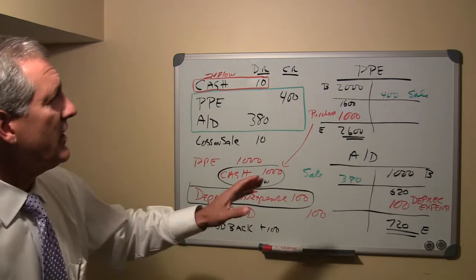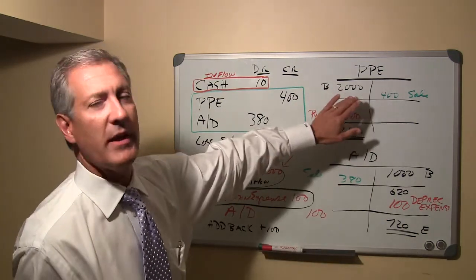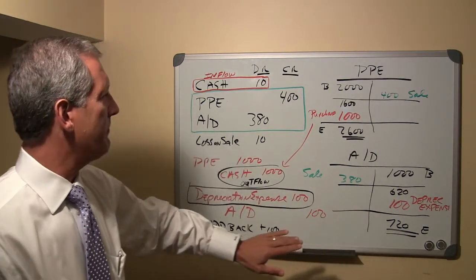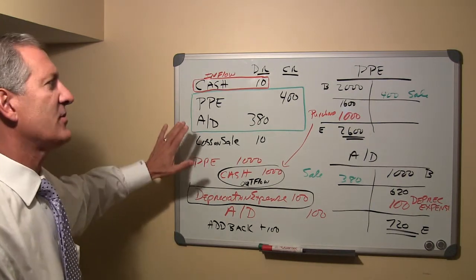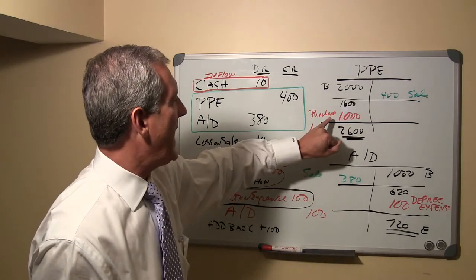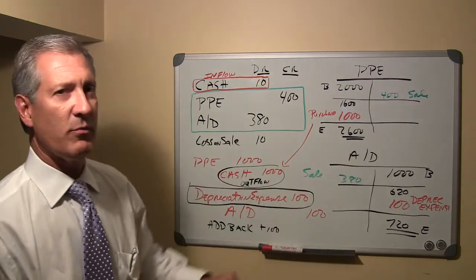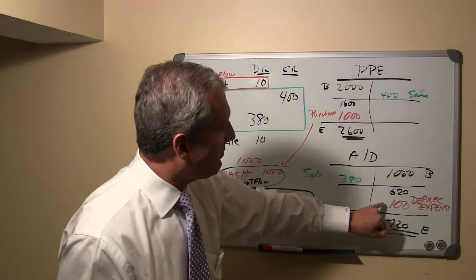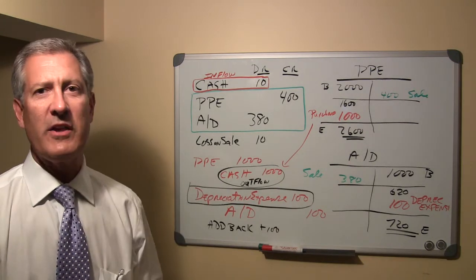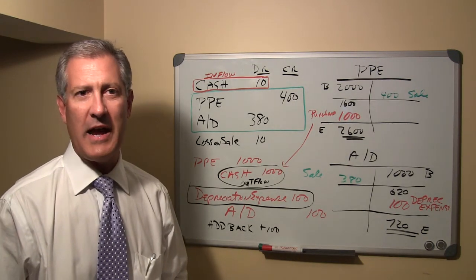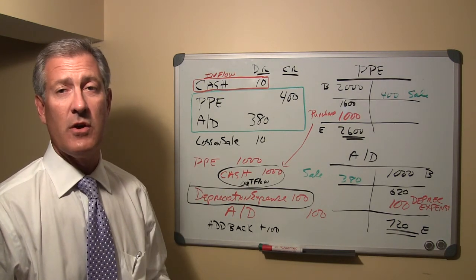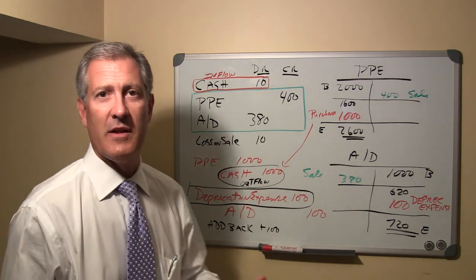Those are two important things to know when preparing the statement of cash flows: look at the property, plant, and equipment T-account and the accumulated depreciation T-account. Keep in mind the sale transaction — post those entries so you can find the cash used to purchase equipment ($1,000) and the depreciation expense recorded ($100). I hope that's a helpful reminder of what we covered in class regarding disposal of an asset and identifying cash flows for the statement of cash flows.